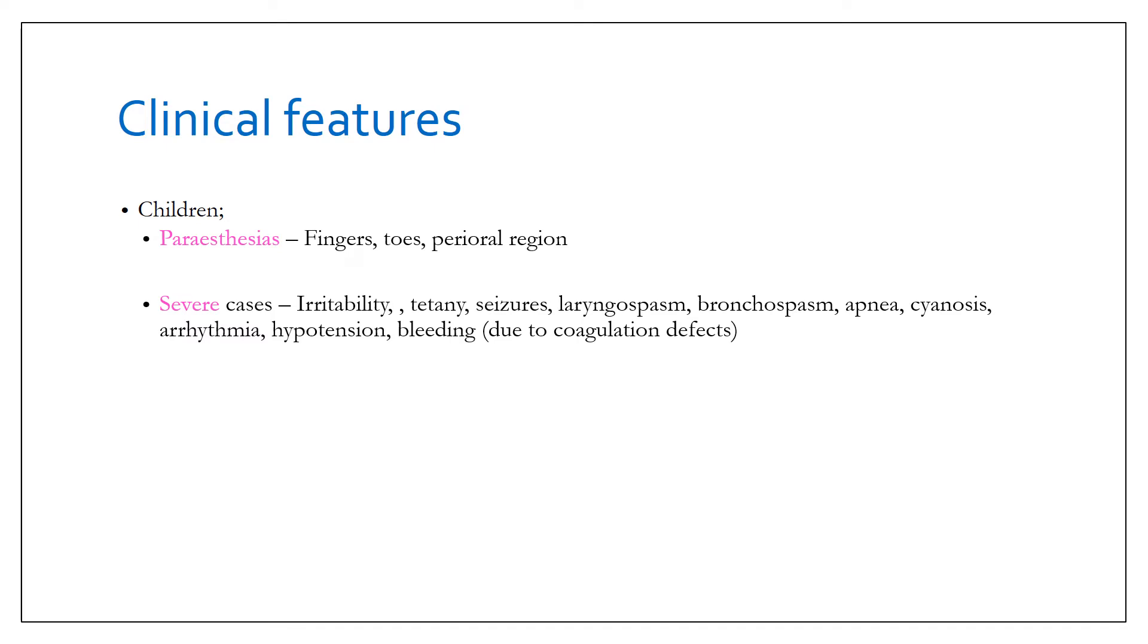The principal clinical features in children are paresthesias in fingers, toes, and perioral regions. Severe cases can produce irritability, tetany, even seizures, laryngospasm, bronchospasm, apnea, cyanosis, arrhythmias, hypotension, and bleeding due to coagulation defects.